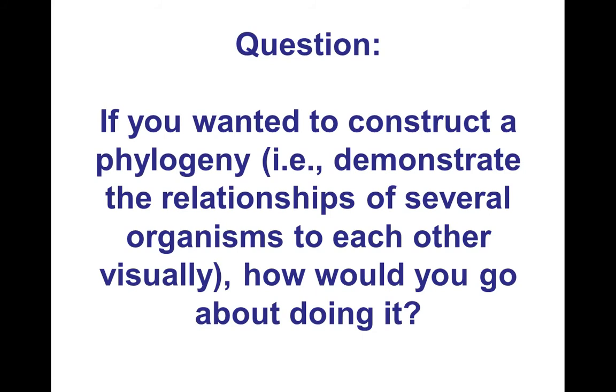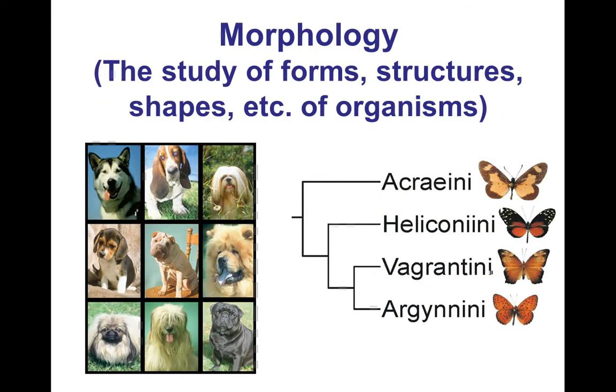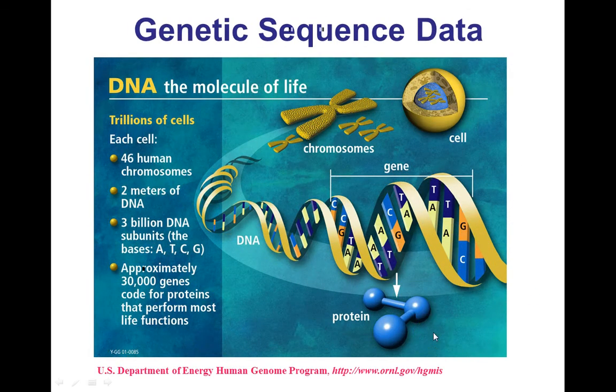So, if we want to construct phylogeny or a phylogenetic tree, demonstrate the relationship of several, how would we go about doing that? We would look at structures, just like we've said in class. These are all dogs. They're related to each other. These are all butterflies, and they're all related to each other. But these two are most closely related. That one is next. That one is farthest. They're all related. They all have a common ancestor. And then, obviously, DNA. We keep saying DNA is the absolute final nail in the coffin of evolution doesn't exist, because DNA just shows everything.